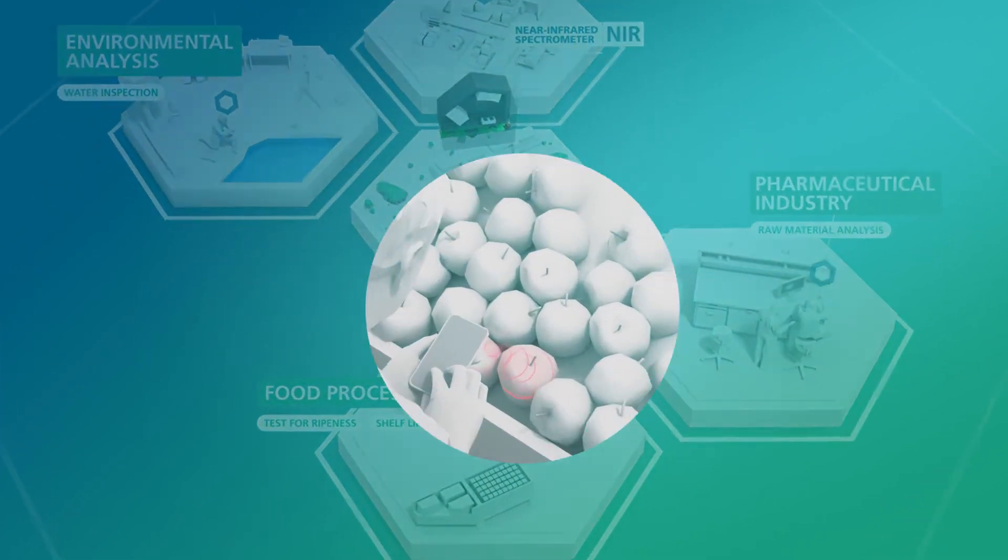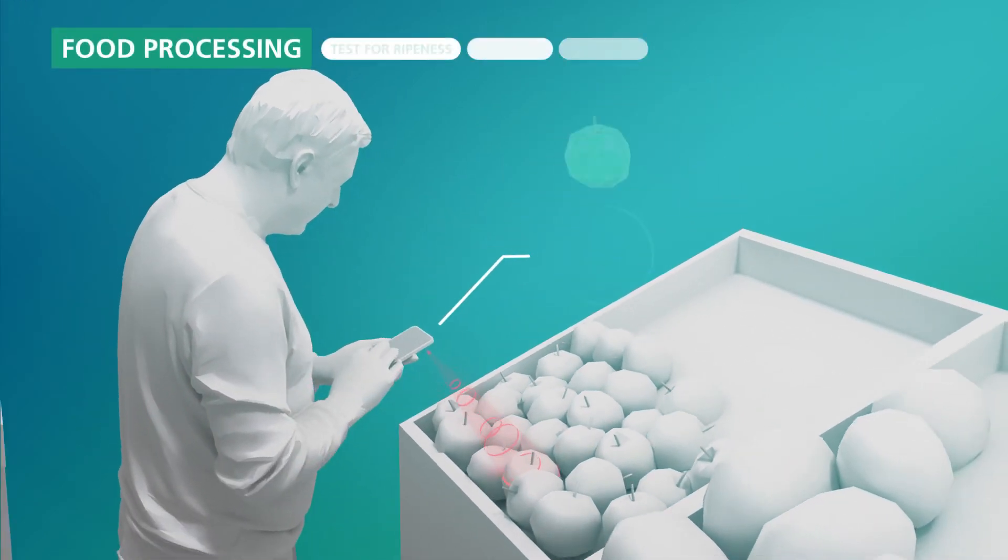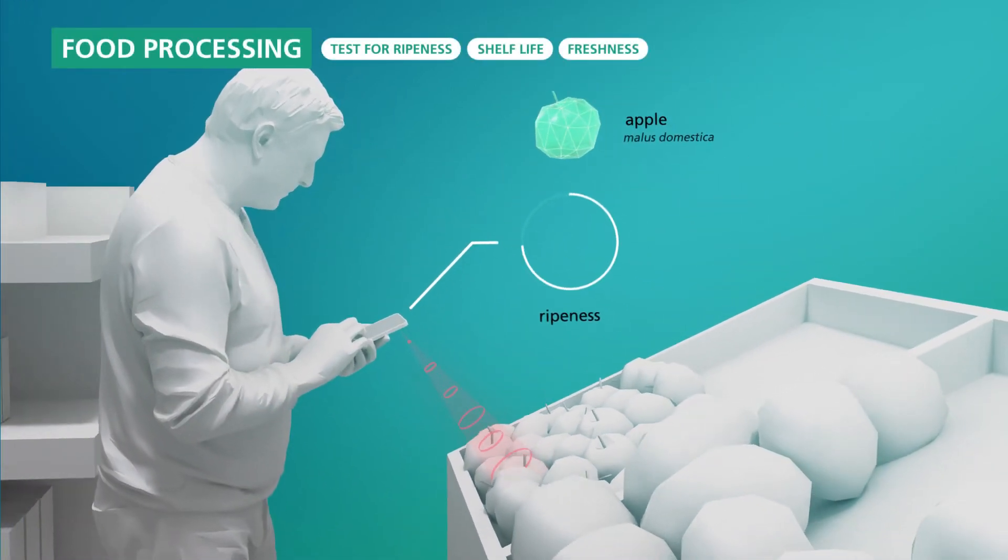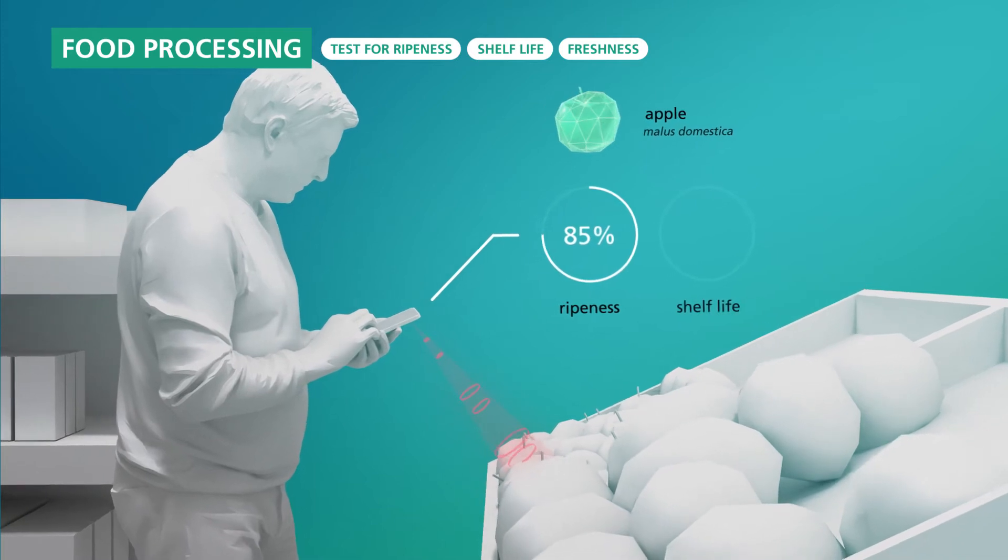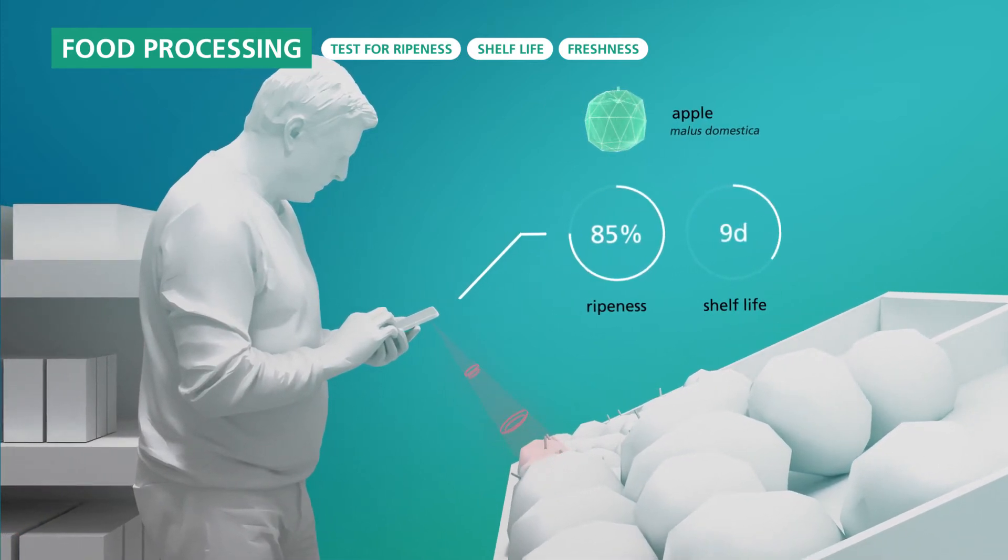For example, in a supermarket, imagine using a spectrometer integrated in your phone to determine the ripeness and the shelf life of an apple before you buy it.